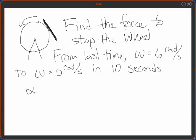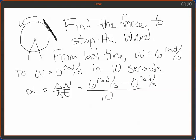So that means that you have an alpha of delta omega over delta t, which is, let's see, 6 radians per second minus 0 radians per second over 10 seconds, which is 0.6 radians per second squared. OK, so that's the angular acceleration.